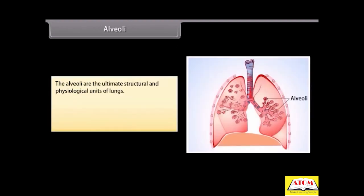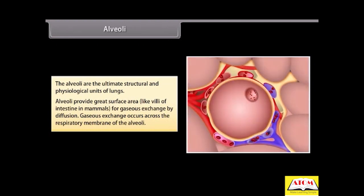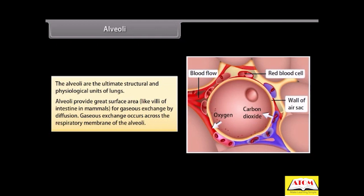Alveoli. The alveoli are the ultimate structural and physiological units of lungs. Alveoli provide great surface area, like villi of intestine in mammals, for gas exchange by diffusion. Gas exchange occurs across the respiratory membrane of the alveoli.